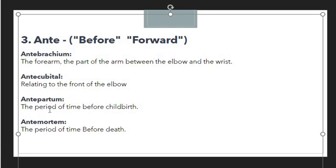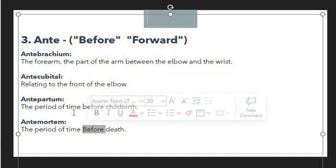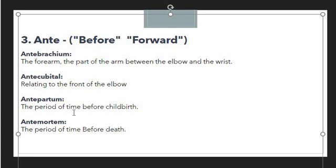In antecubital, 'ante' represents the sense of before and forward — specifically the front part of the elbow. Then we have antepartum, which means the period of time before childbirth. Just opposite to this, we have antemortem, which refers to the period of time before death. In both cases, 'ante' denotes the sense of before — before childbirth or before death.